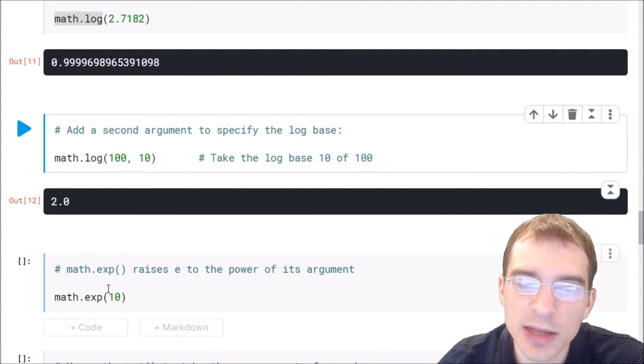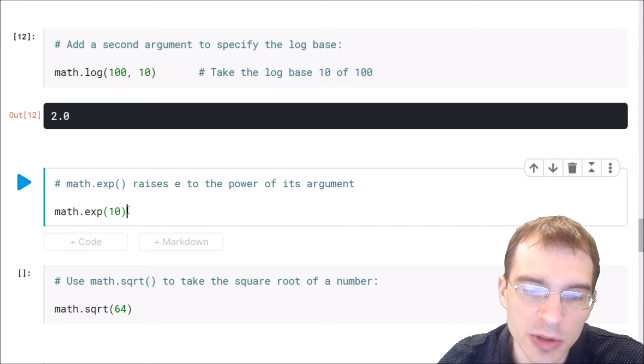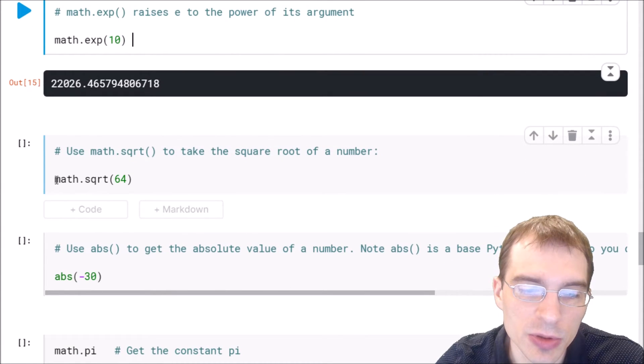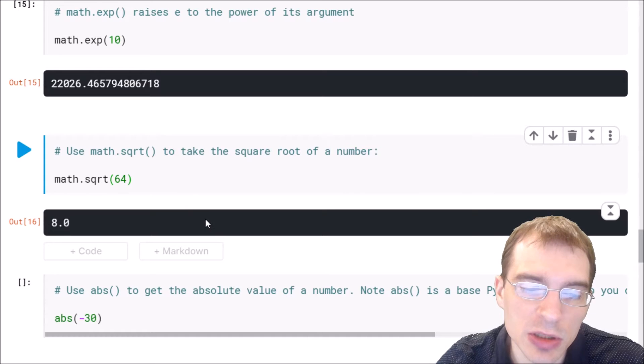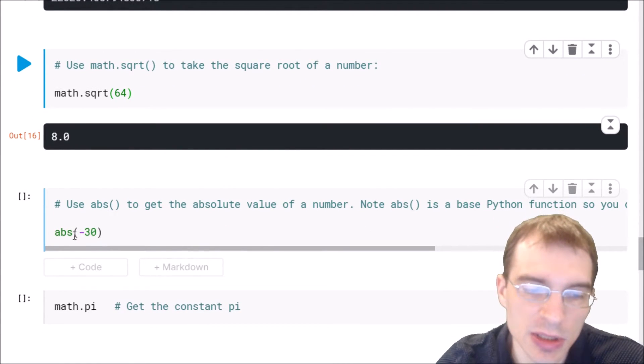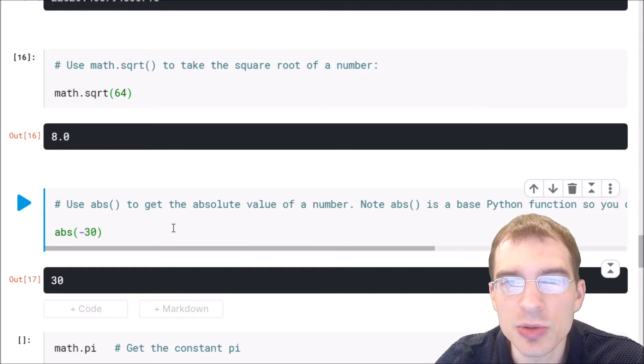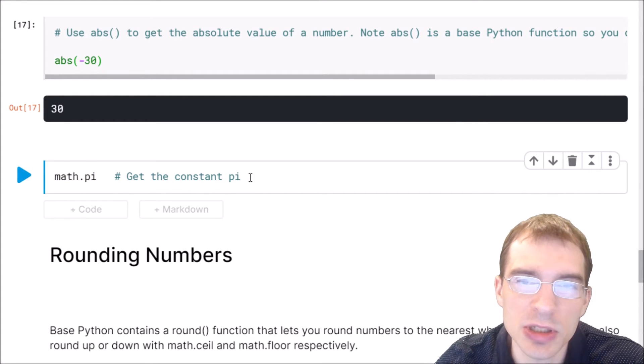You can use math dot exp to do the exponentiation function, which is just the inverse of the log function. Here we're going to do math dot exp with 10 and get some big number. We can also use math dot sqrt to do the square root function. Here we're doing the square root of 64, which should be 8. We can use the abs function to get the absolute value of a number. Note that abs is a base Python function, so we don't have to use the math package. We're going to take the absolute value of negative 30, which should be 30. You can also use the math package to get the constant pi by typing math dot pi after loading the math package.